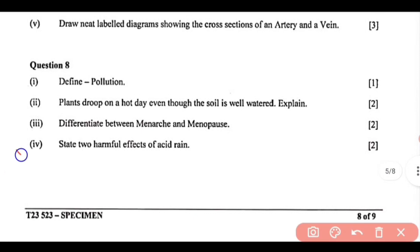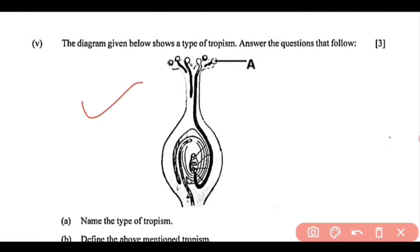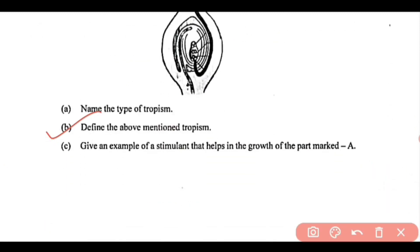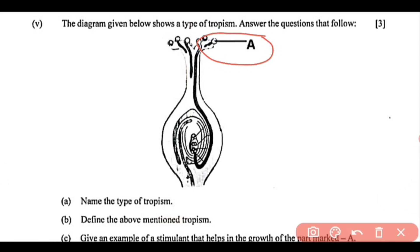Next, question 4: state two harmful effects of acid rain. You can write damage to soil, damage to fresh water life, or damage to plants — write any two. Next, question number 5: the diagram shows a type of tropism. Name the type of tropism — this is chemotropism. Define chemotropism — it is the phenomenon of growth of plant organs in response to a chemical stimulus. Give an example of a stimulant that helps in the growth of the part marked A — pollen grain. You can write peptones and sugar.